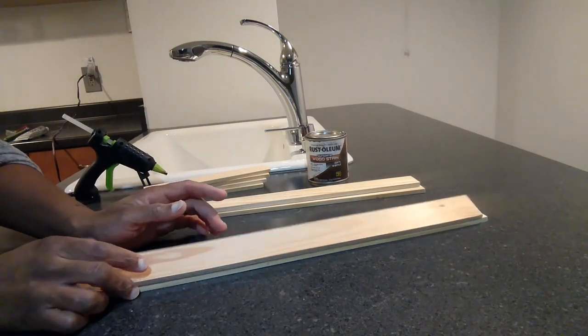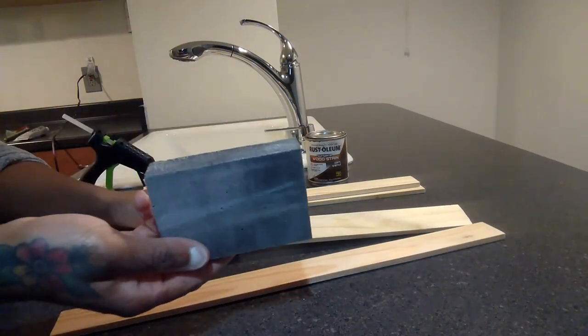The paint mixing sticks have numbers on them, so what I did is I just took my sanding block from the Dollar Tree and sanded the numbers off of all of them.